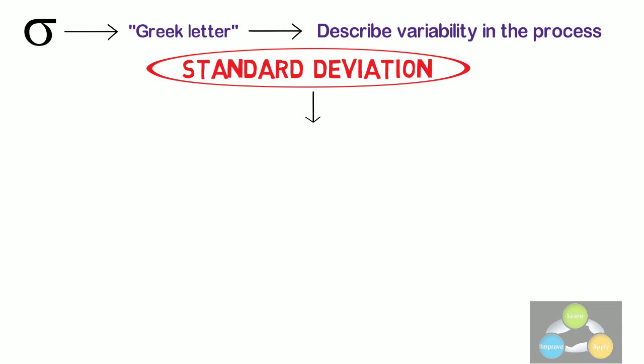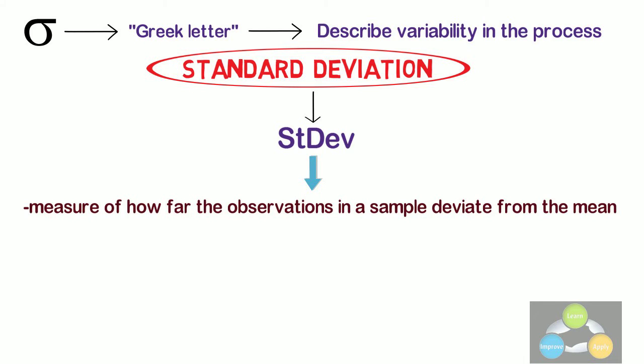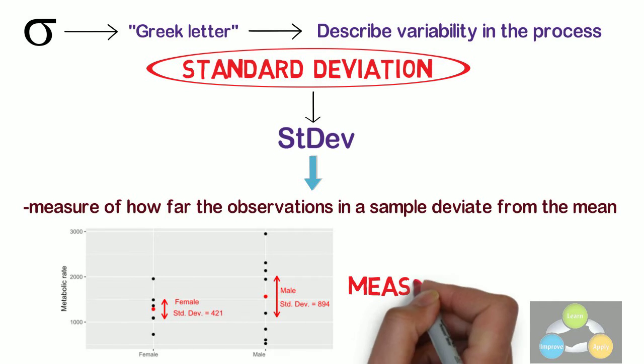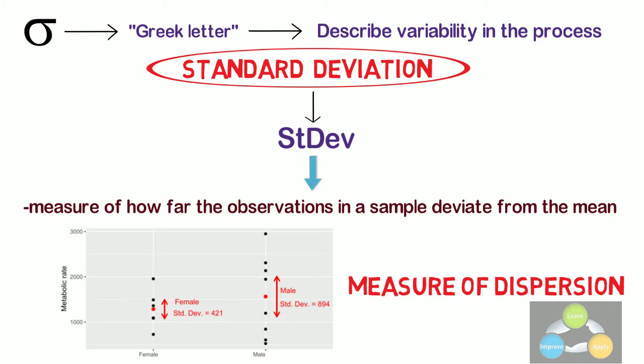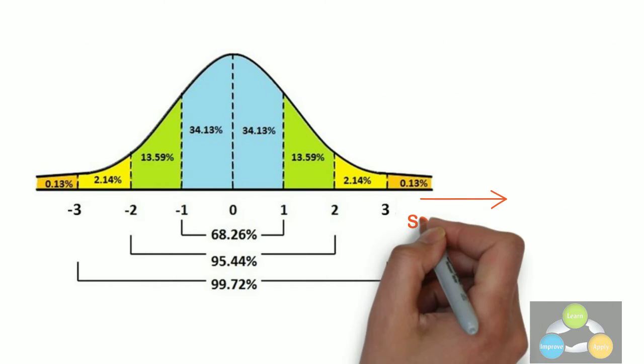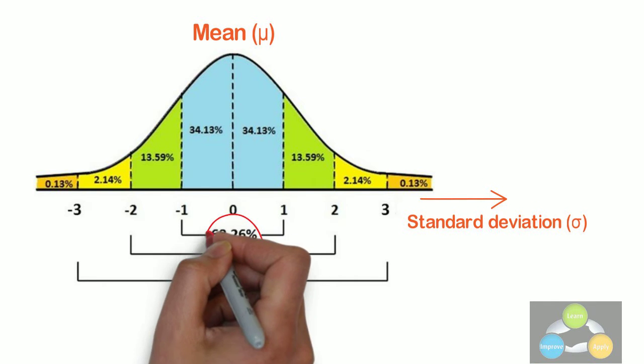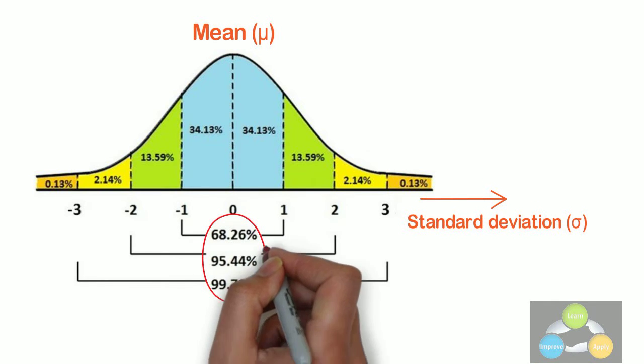The standard deviation, denoted by STDEV, is a measure of how far the observations in the sample deviate from the mean. It is analogous to an average distance independent of the direction from the mean. If the data are normally distributed, then the standard deviation and mean can be used to determine what proportion of the observations fall within any given range of values.